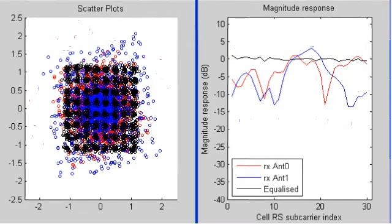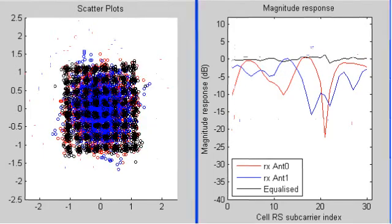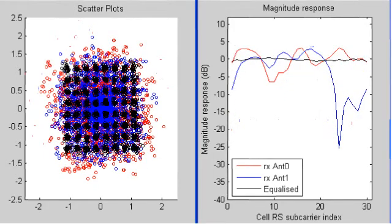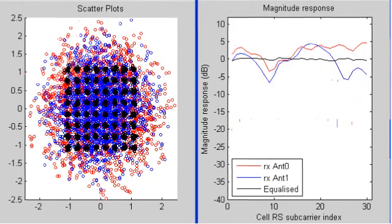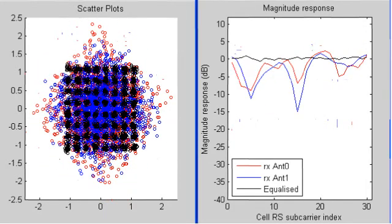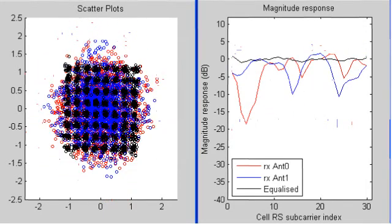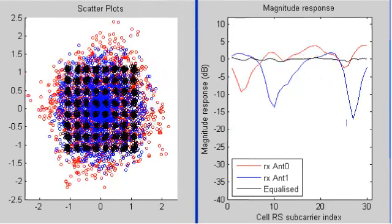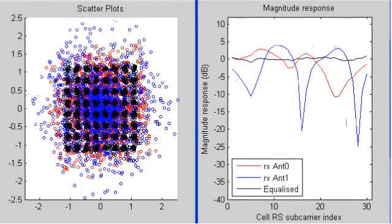The plot on the right shows the magnitude of the frequency response of the channel at the location of the reference signals. This clearly shows the frequency selectivity and time variation of the channel. The equalised response in black is almost always flat, except in some cases where a deep fade occurs at the same point in frequency and time for both receive antennas.